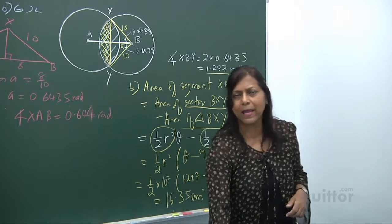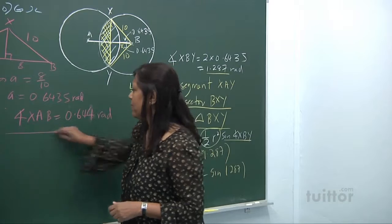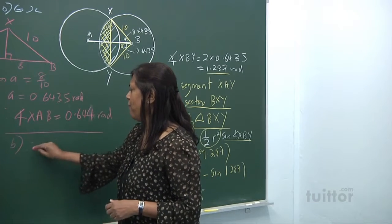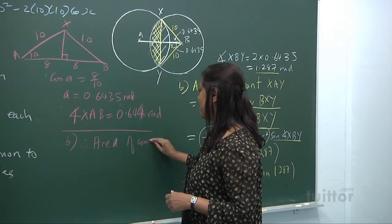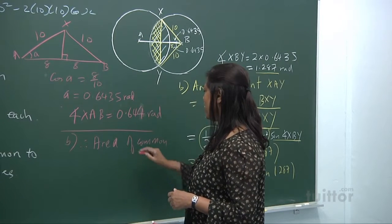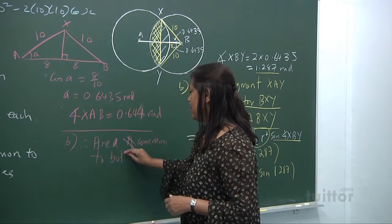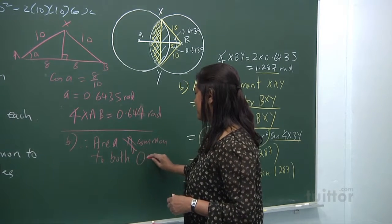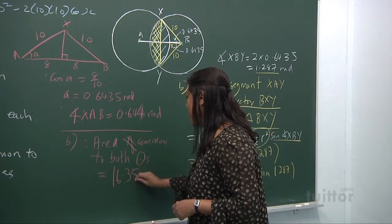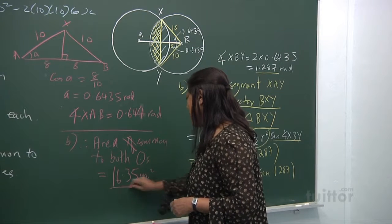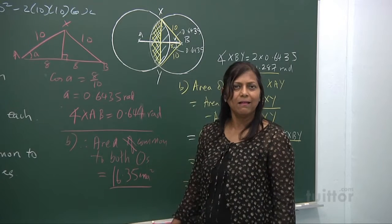So, we found the area of the common circle. Therefore, the area of area common to both circles is actually equal to 16.35 cm squared.